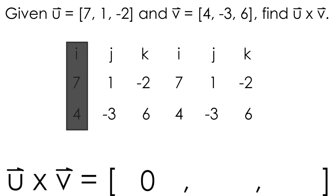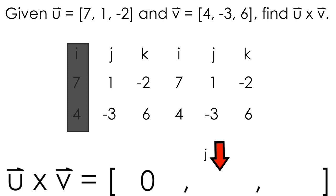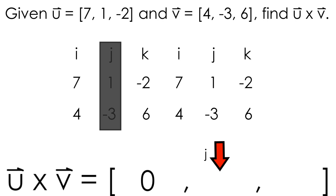We can really just repeat this process for the j component by covering up the j column. So again, we multiply on a diagonal from upper left to lower right, taking negative 2 times 4, and subtracting 6 times 7, multiplying from lower left to upper right. When we clean this up, we end up with negative 50.